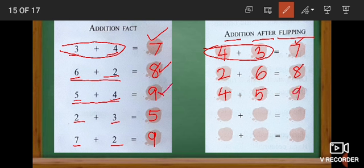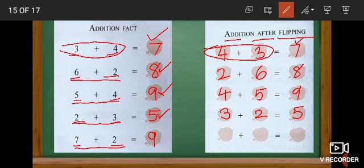And the next sum: two plus three — we flip the number to three plus two. The answer is five. And the next: seven plus two — we flip to two plus seven. The answer is nine.